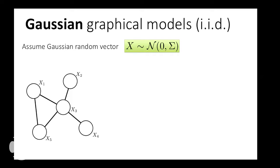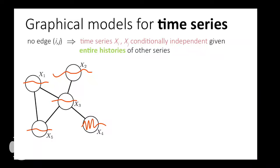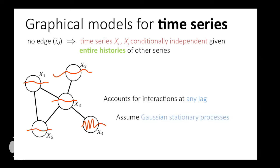Typically when people talk about graphical models, they're talking about collections of IID random variables. For Gaussian IID random variables, the zeros in the inverse covariance encode the graph structure — conditional independencies. For example, no edge between x1 and x2 means those variables are conditionally independent given x3, x4, and x5, seen from a zero in the 1,2 entry of the inverse covariance. But we don't have IID random variables — we have collections of time series. We'd like to encode statements of conditional independencies between entire time courses. These graphical models of time series account for interactions at any possible lag, and for this talk we assume Gaussian stationary processes.